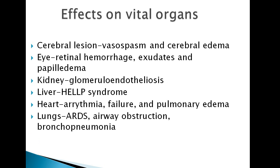For the vital organs: the brain may develop vasospasm and cerebral edema. For the eye, there is retinal hemorrhage, exudates, and papilloedema. For the kidney, the patient may have glomeruloendotheliosis. For the liver, the patient may develop HELLP syndrome — hemolysis, elevated liver enzymes, and low platelets. For the heart, the patient may have cardiac failure and pulmonary edema. For the lungs, the patient may develop acute respiratory distress syndrome, airway obstruction, or bronchopneumonia.